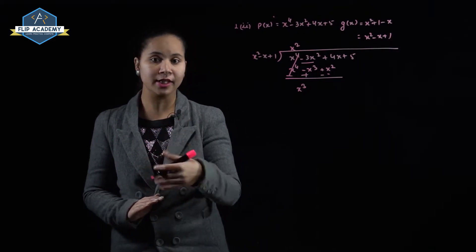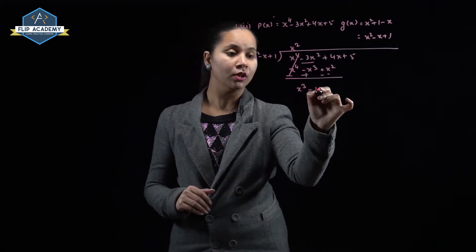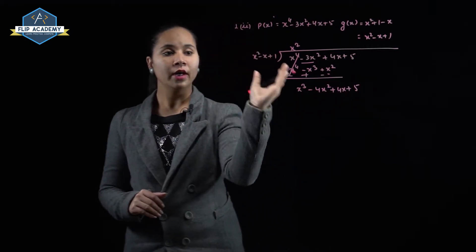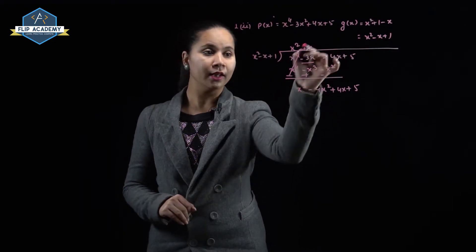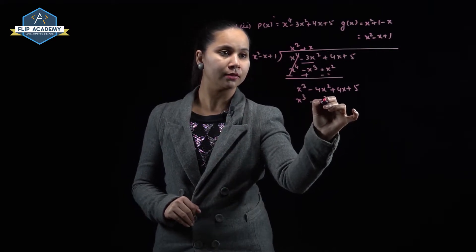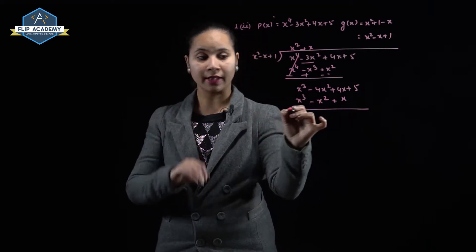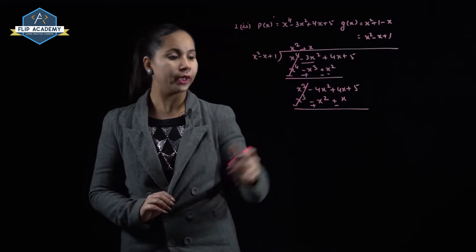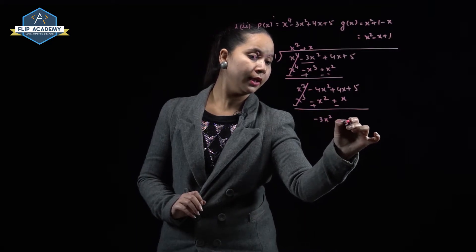x² goes into x³, x times. Multiply x by (x² - x + 1) to get x³ - x² + x. Change the sign: minus, plus, and minus. x³ cancels, and combining like terms -3x² - (-x²) gives -3x² + 3x + 5.